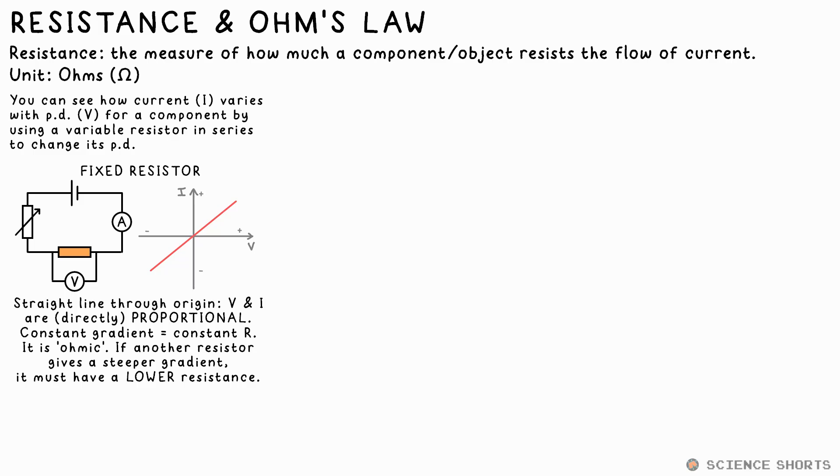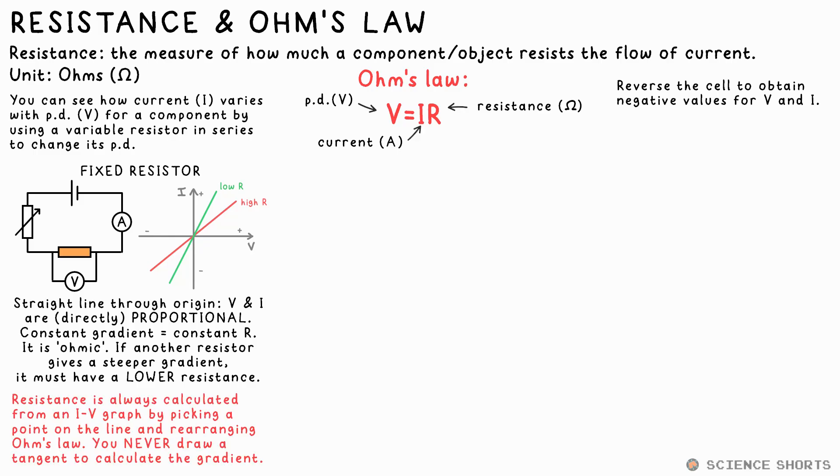This straight line with a constant gradient shows that the resistor has constant resistance. We say it's ohmic. The steeper the gradient of this line, the lower the resistance of the resistor, as more current is flowing per volt. The equation for resistance is Ohm's law, V equals IR. We can get the resistance of a component from an IV graph like this by picking a point on the line and rearranging Ohm's law. So R is equal to V over I.